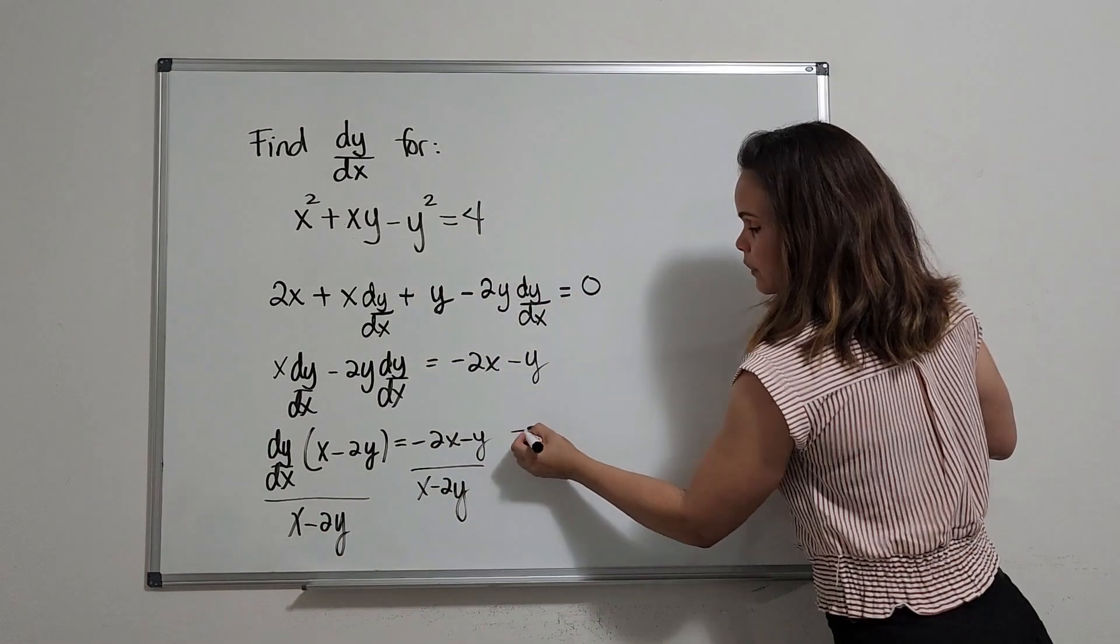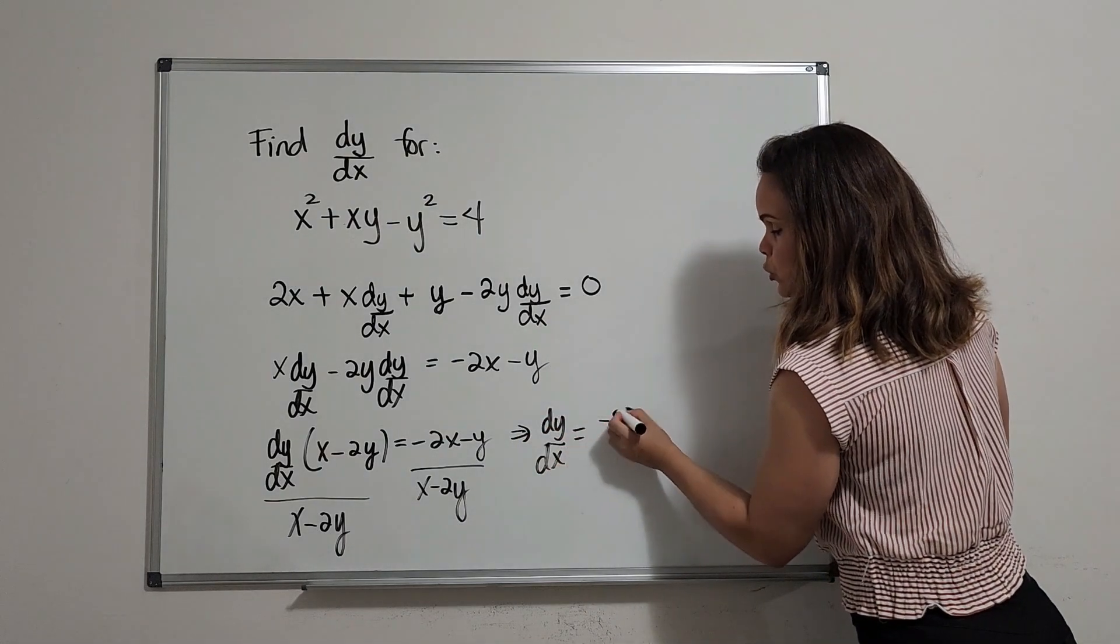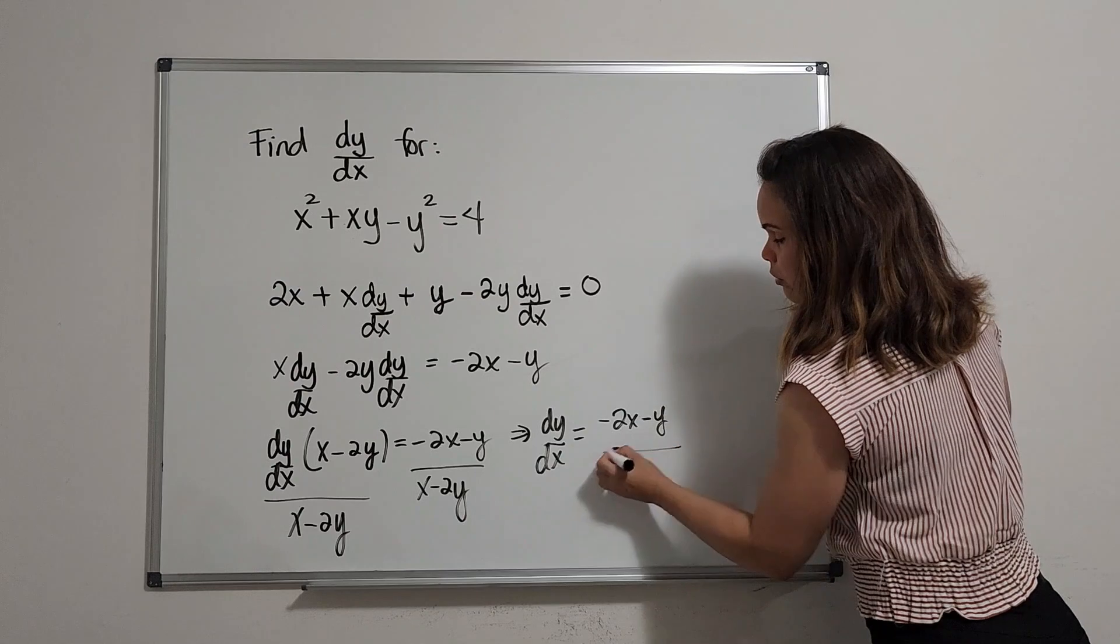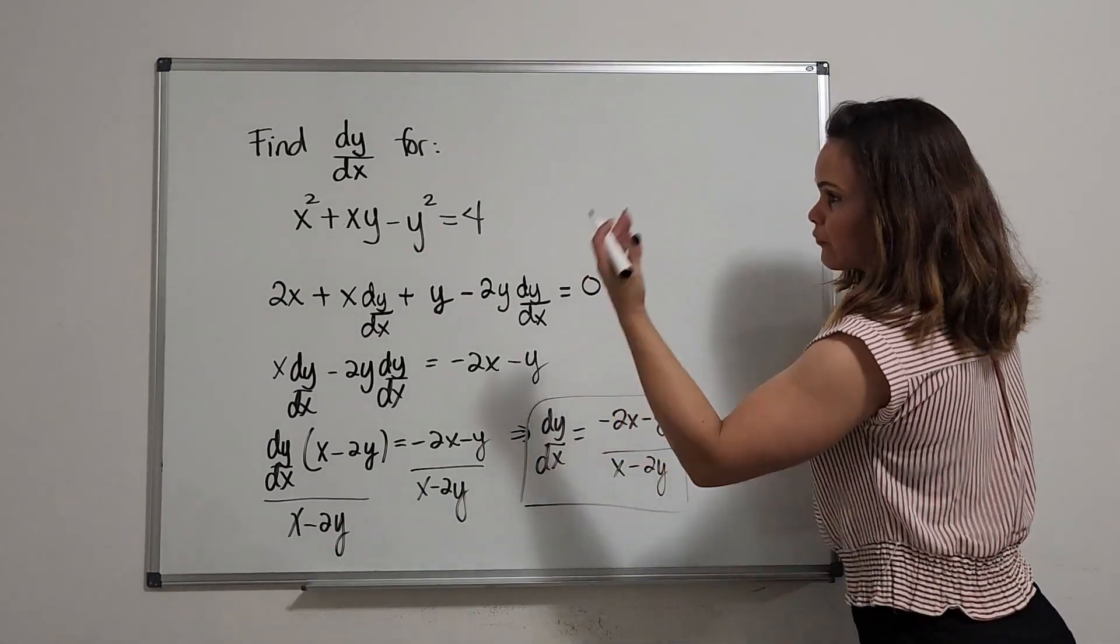So this is it. We have that dy dx is going to be equal to minus 2x minus y over x minus 2y. And here we have the derivative for this equation.